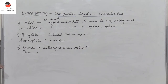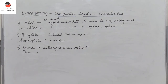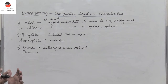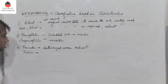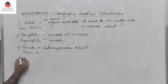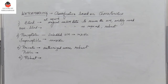Public watermarking techniques are such that anyone can read the watermark. Public watermarks are embedded in a location known to everybody, and they are easily detectable by any software. Such watermarks are referred to as public watermarks.